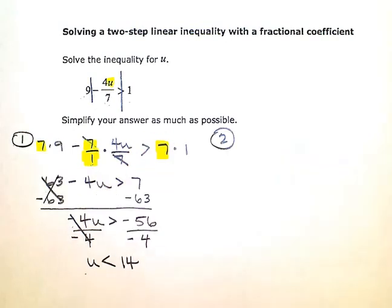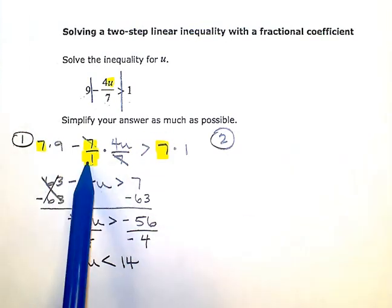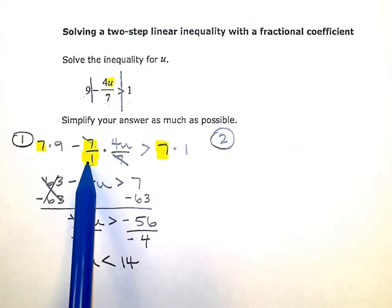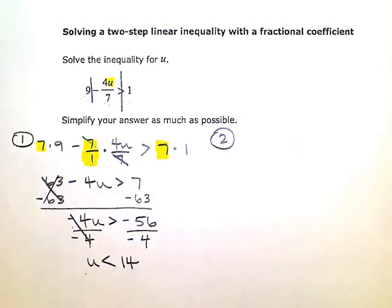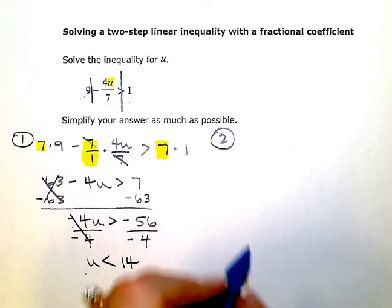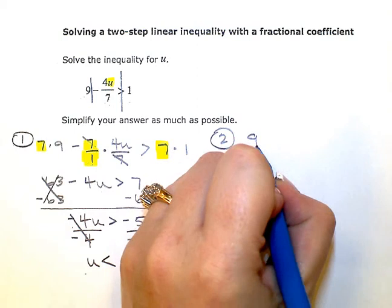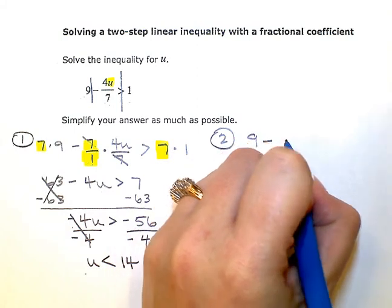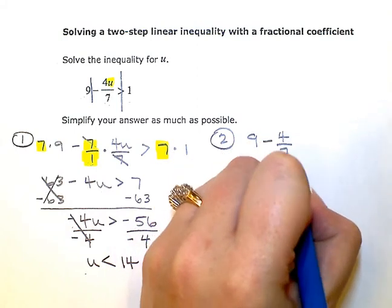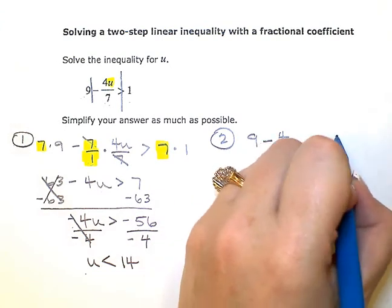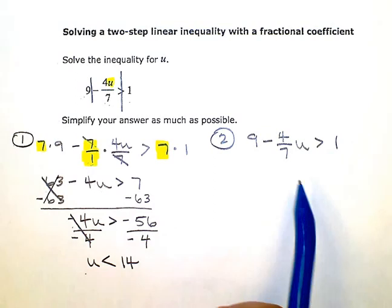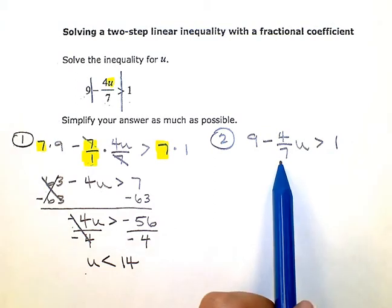Now I'm going to solve it one more way — Method Two — where I don't clear the fraction. I just go ahead and leave the fraction in and solve it, treating the fraction like any other number. I'm going to rewrite my inequality as nine minus four-sevenths u is greater than one.